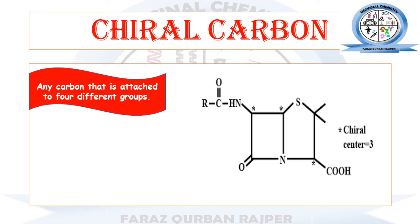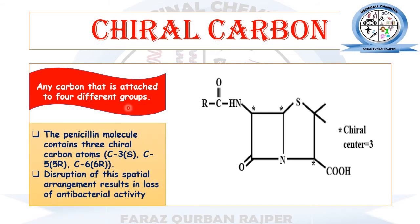Now at the end of the structure-activity relationship of penicillin, let's check out the chiral carbons present in the penicillin structure. A chiral carbon is any carbon attached to four different functional groups. Since carbon has a valency of four, once any carbon atom is bonded to four different functional groups, that carbon is known as a chiral carbon. In the chemical structure of penicillin, there are three chiral carbon atoms.